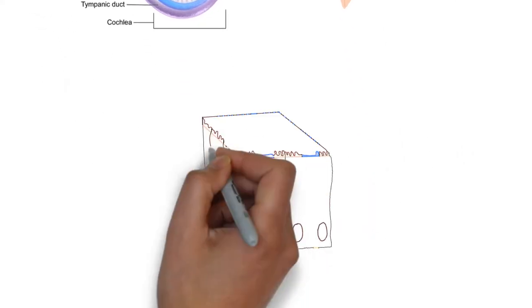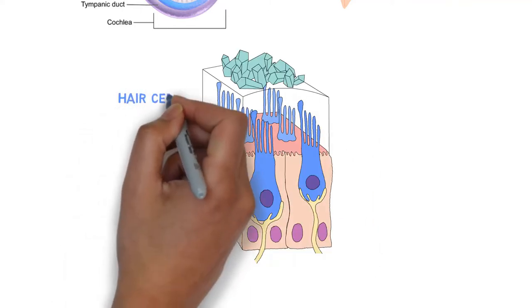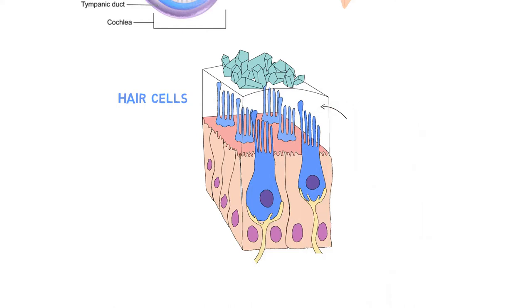The hair bundles in both of these organs are entrenched in a gelatinous matrix with a thin membrane on top of it called the autolithic membrane. On top of the autolithic membrane are crystals of calcium carbonate called otoconia.